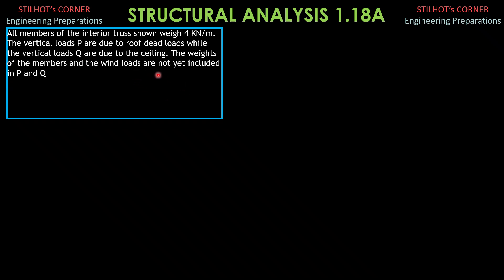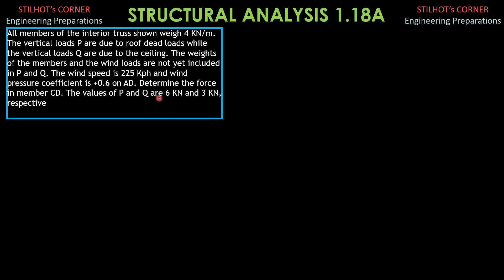The weights of the members and the wind loads are not yet included in P and Q. The wind speed is 225 km per hour and wind pressure coefficient is positive 0.6 on AD. Determine the force in member CD. The values of P and Q are 6 kN and 3 kN respectively, and the trusses are spaced 4 meters apart.